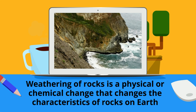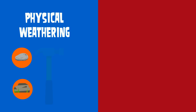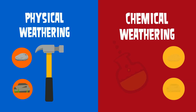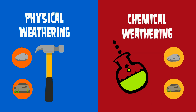Weathering of rocks is a physical or chemical change that changes the characteristics of the rocks on earth. There are two major types: physical weathering, which involves breaking rocks into smaller fragments caused by environmental factors, and chemical weathering, which are changes that involve rocks being changed into new substances or minerals chemically.